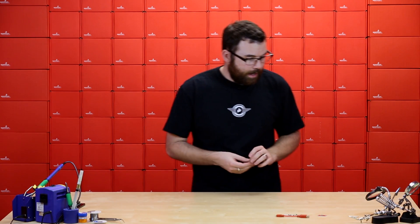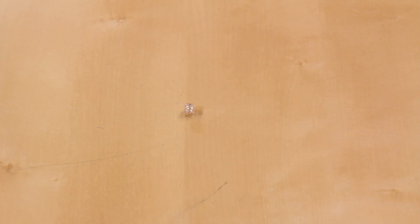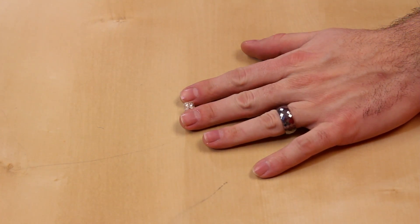First up we've got this little guy. This is a five millimeter piranha LED. Not sure why they're called piranha but that's what they're called. It is an RGB LED.